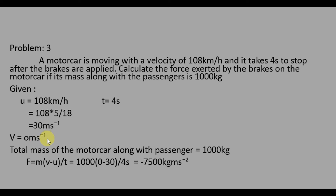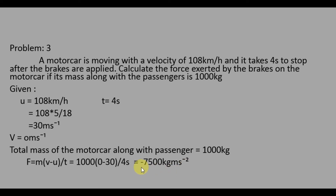Now calculate the force. The total mass of the motor car along with the passengers is M = 1000 kg. Write the force equation: F = M(V − U) / T. Substituting: F = 1000 × (0 − 30) / 4. We get −7500 kg·m/s² (i.e., −7500 N). The minus sign tells us the force exerted by the brakes on the motor car is opposite to the direction of the car's motion.